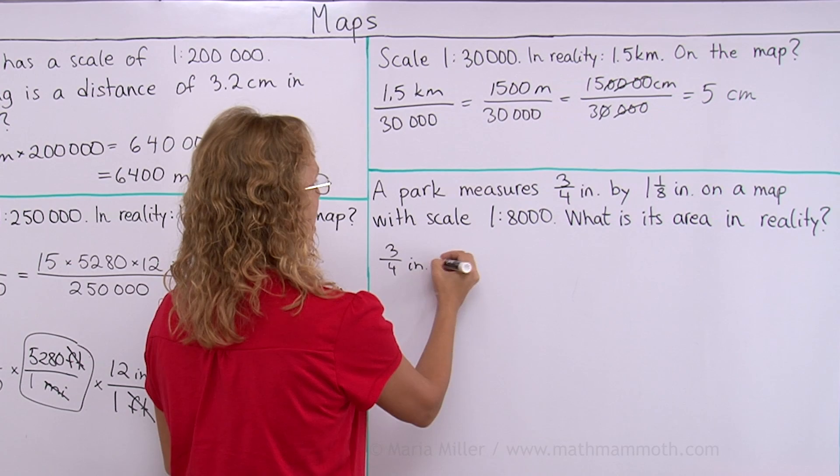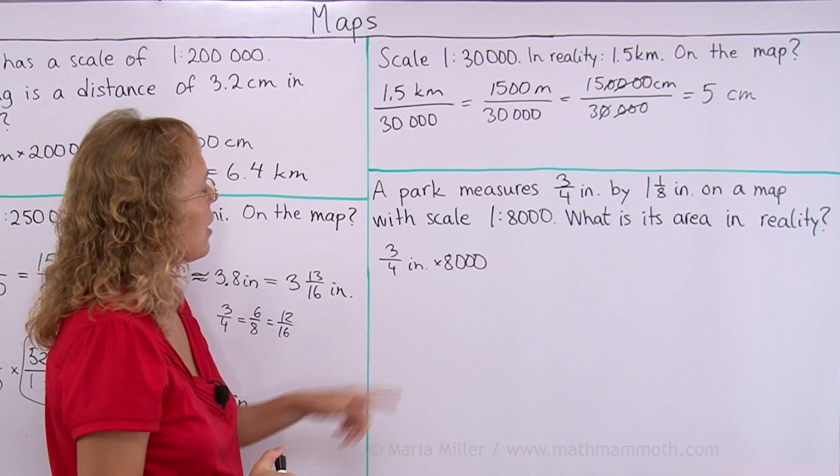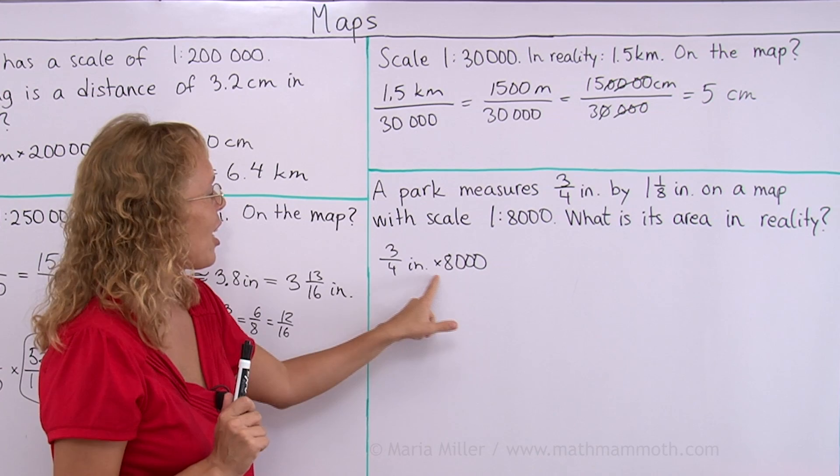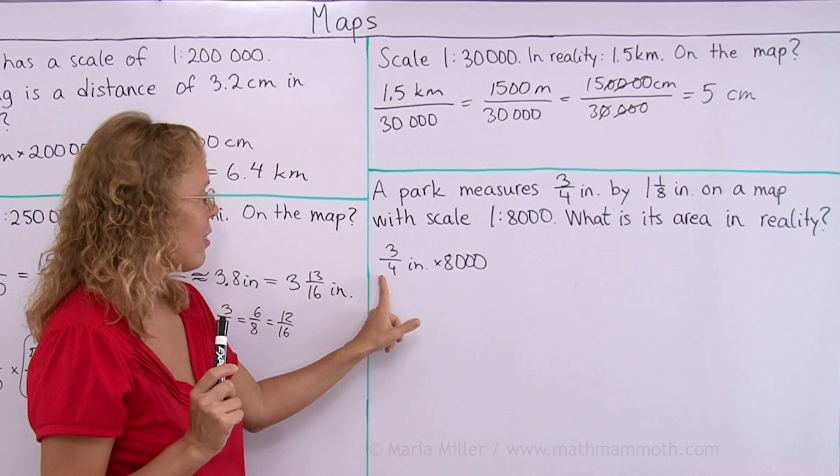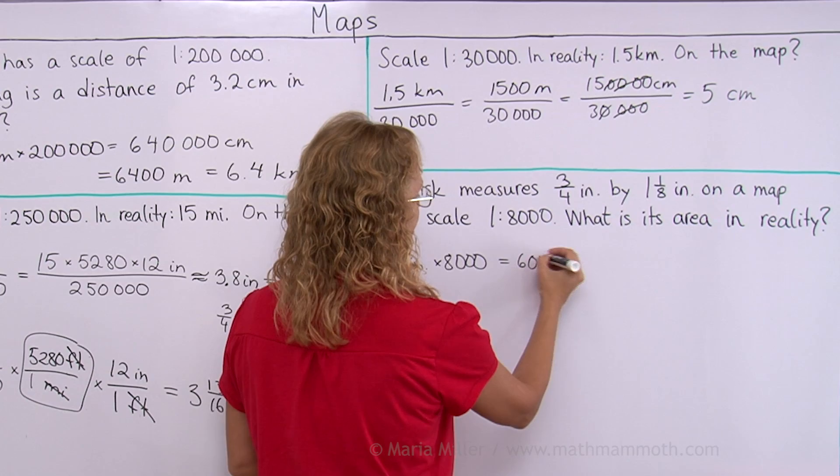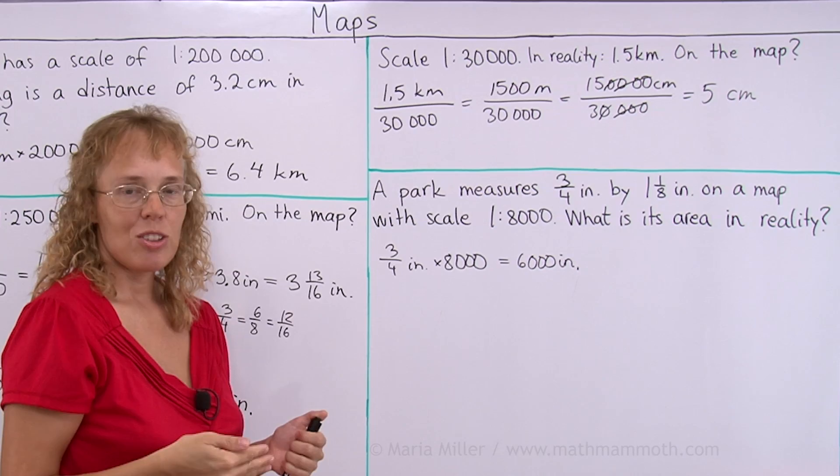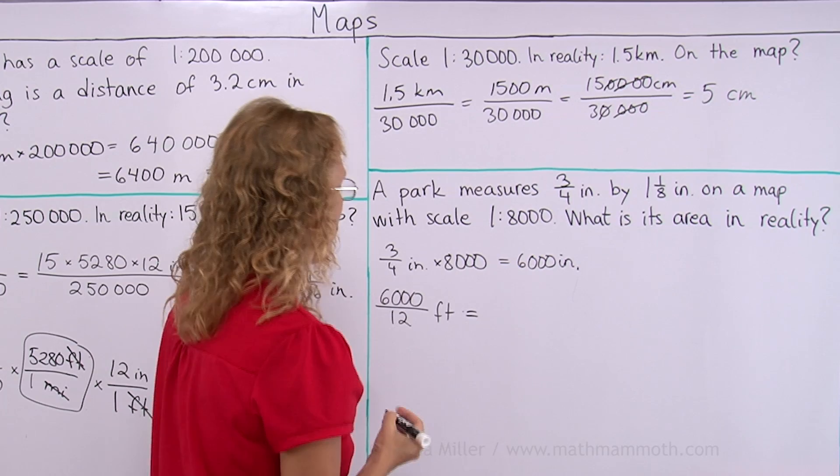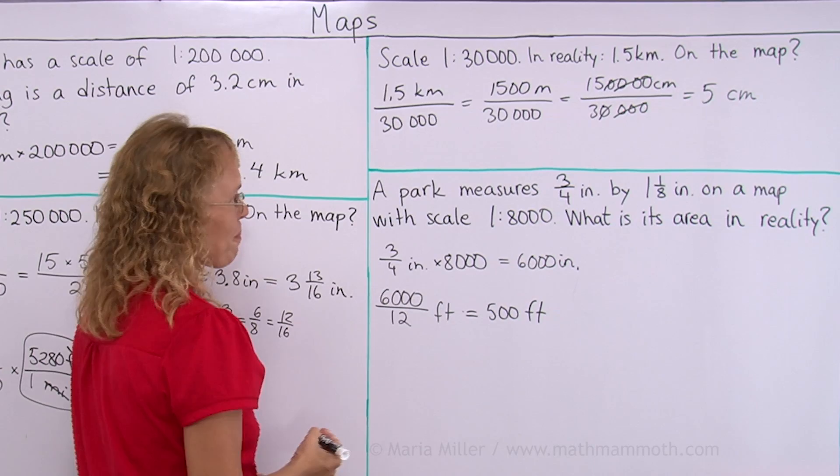You can use fractions if you want. Or you can use a decimal number. Just put 0.75 times 8,000. This time we can use the fraction too because it ends up being 3 times 8, which is 24, divided by 4, which is 6. So this is exactly 6000 inches. But for the park you of course want that in feet or miles. So we need to convert that still. 6000 inches divided by 12 to get it in feet. And that is exactly 500 feet. I have some easy numbers this time. Even though I chose fractions.